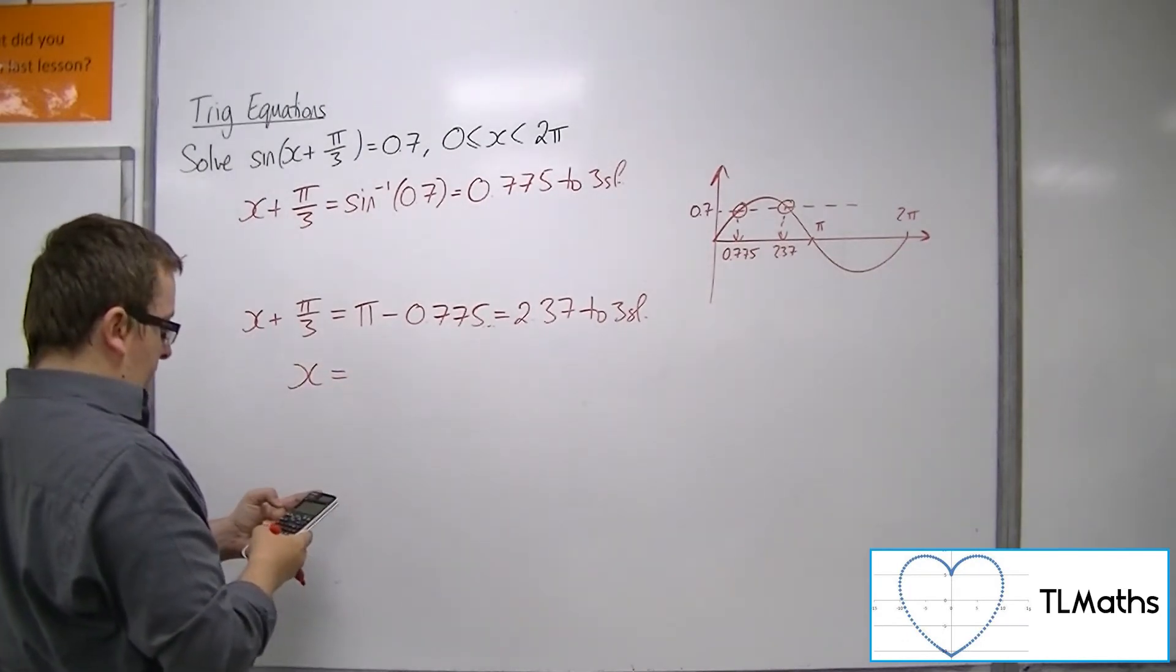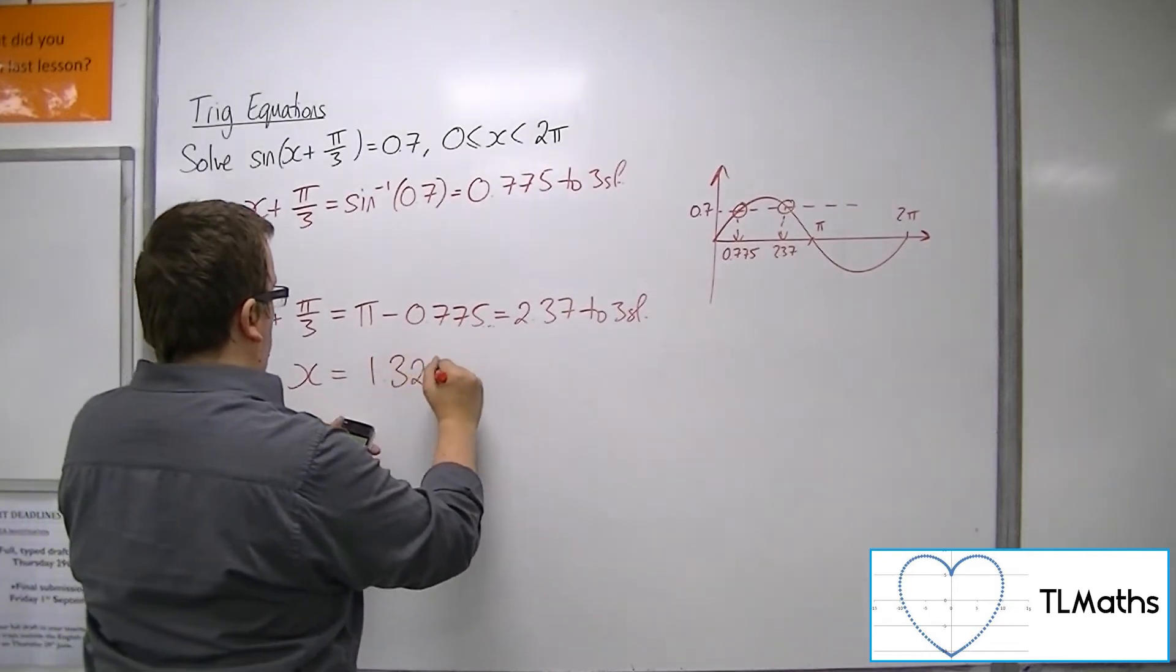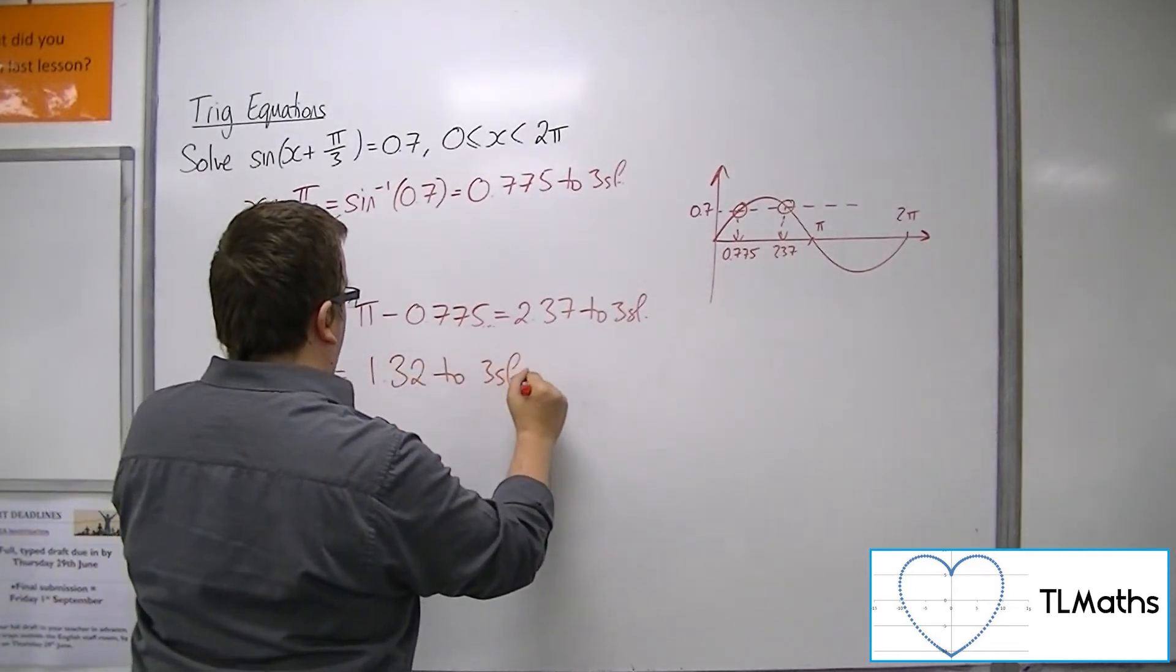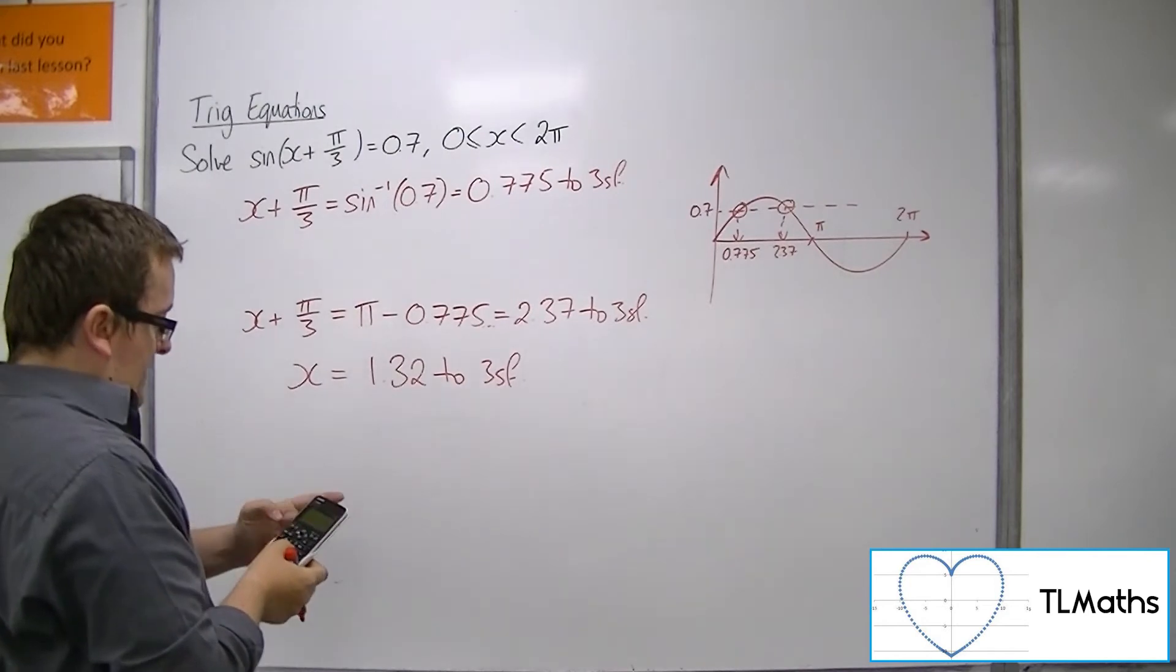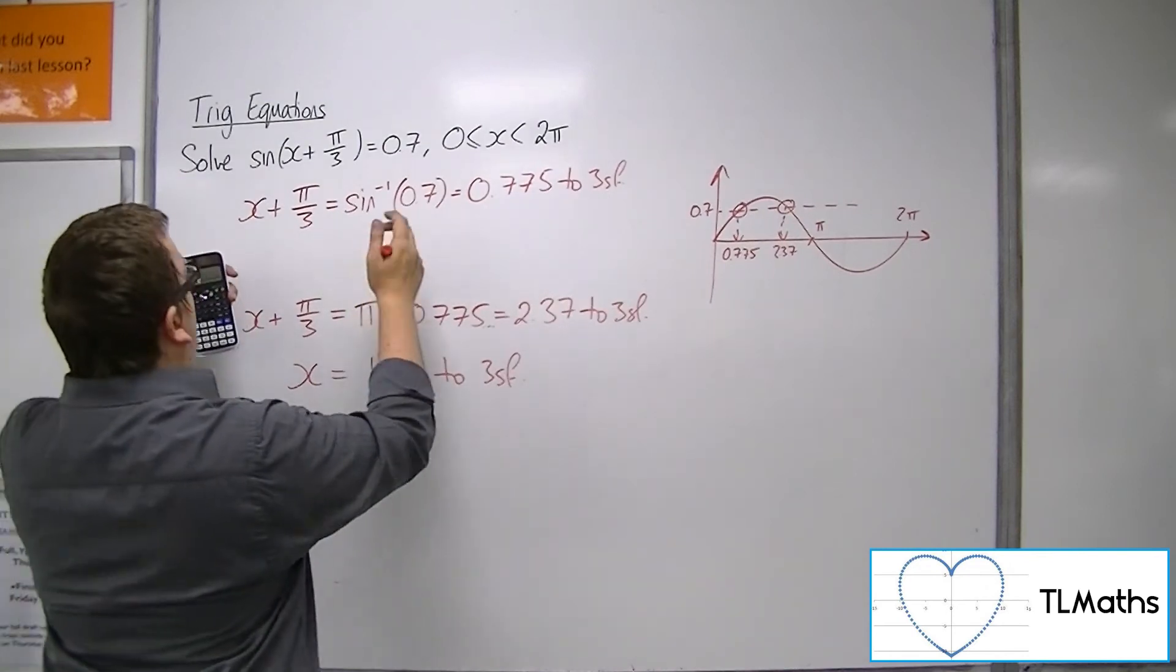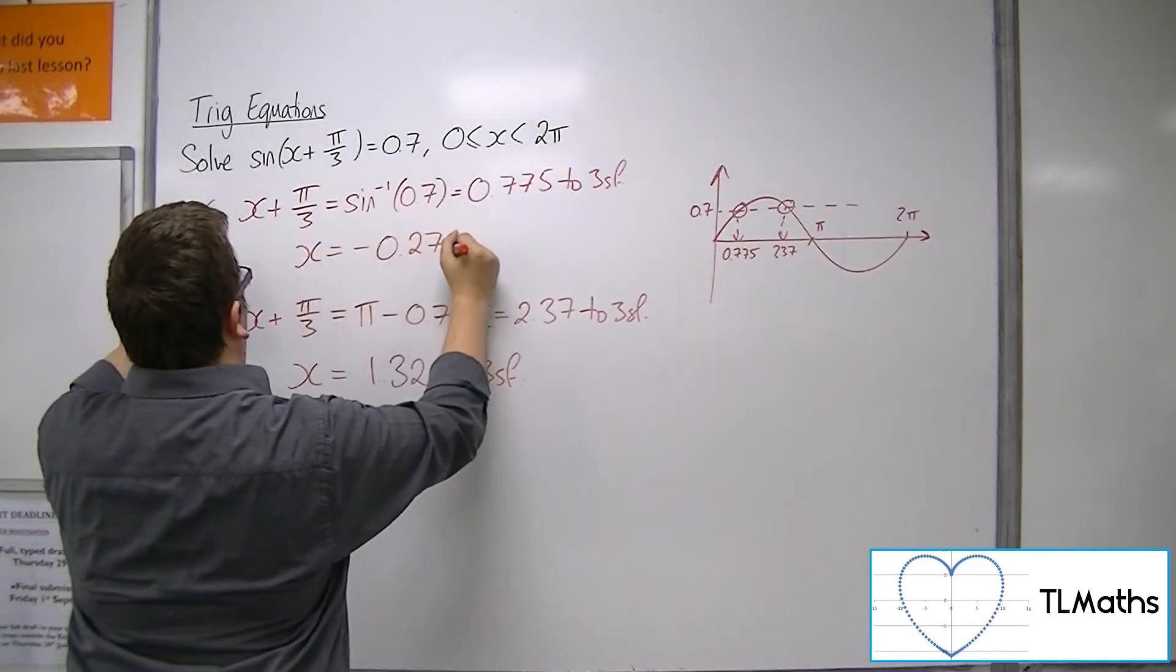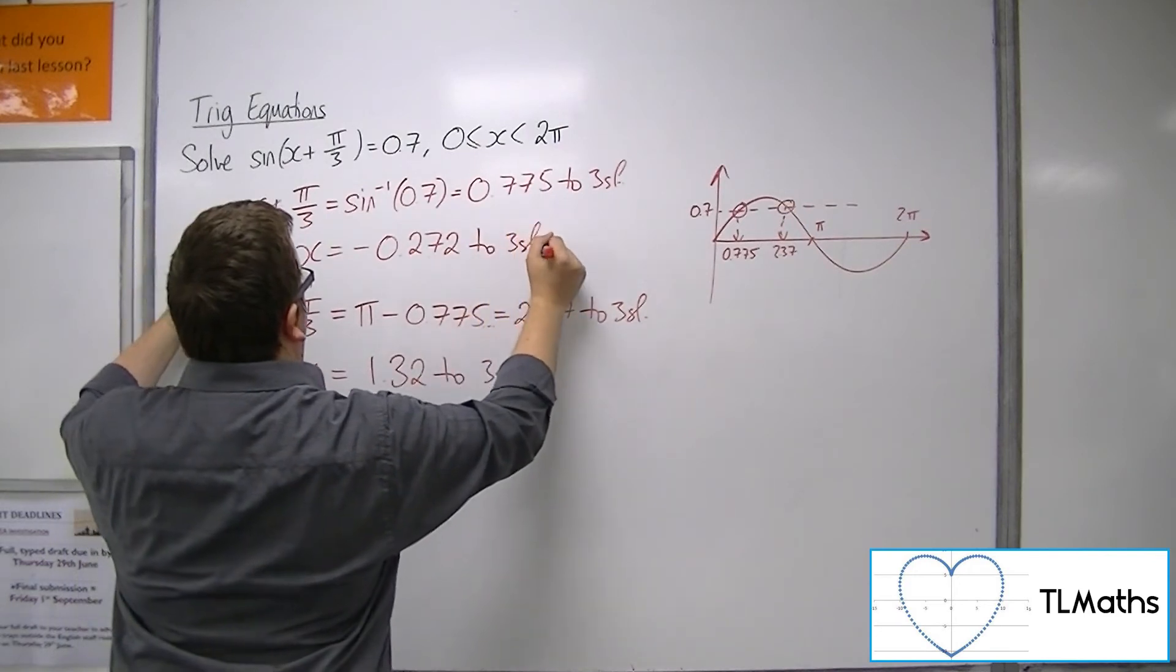Subtracting π/3 from here, we get 1.32 to 3 sig fig. And then subtracting π/3 up here, we get x is minus 0.272 to 3 sig fig.